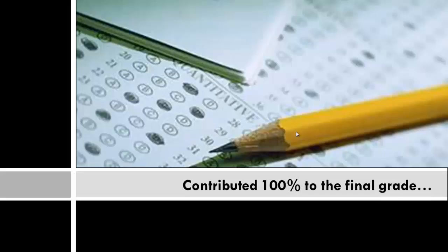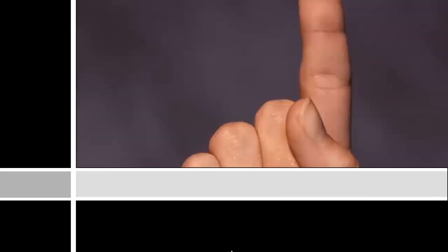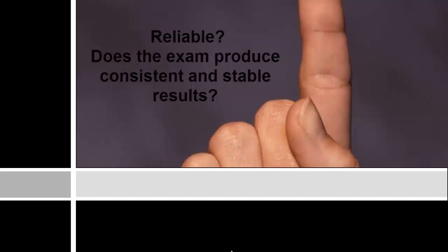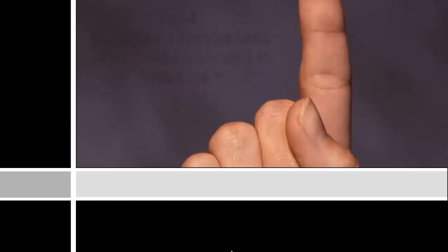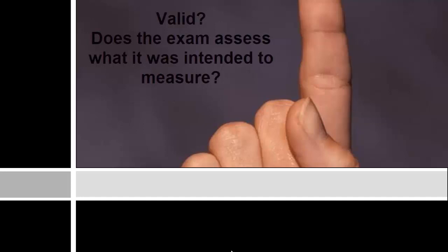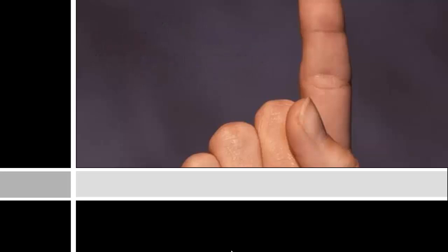Remember the example given at the onset of the course. In that example, I referenced a university pathology course exam that served as the only form of assessment for the course. There was only one opportunity to demonstrate learning, and that took place at the one final exam. Consider issues of reliability — the degree to which an assessment tool produces stable and consistent results — as well as issues of validity, or how well a test measures what it is supposed to measure.